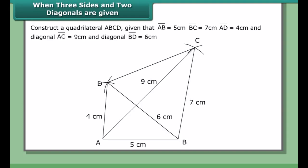When three sides and two diagonals are given, construct a quadrilateral ABCD given that AB = 5 cm, BC = 7 cm, AD = 4 cm, diagonal AC = 9 cm, and diagonal BD = 6 cm.